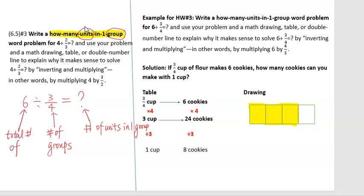So we need to pick one thing for unit and one thing for group. There are many different word problems we can come up with. For example, the question could be: how many of some kind of units per something, or in one thing? We could say the number of cups in one serving, or the number of cups in one recipe or one batch, like we did in the previous section.